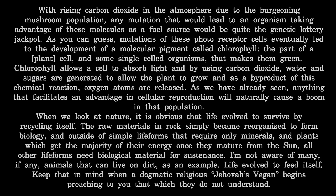Mutations of these photoreceptor cells eventually led to the development of a molecular pigment called chlorophyll — the part of a cell and some single-celled organisms that makes them green. Chlorophyll allows a cell to absorb light, and by using carbon dioxide, water and sugars are generated to allow the plant to grow; and as a byproduct of this chemical reaction, oxygen atoms are released. Anything that facilitates an advantage in cellular reproduction will naturally cause a boom in that population.